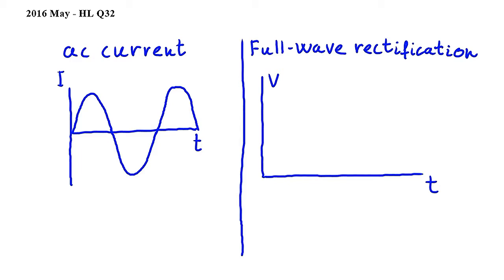the current time graph has a sinusoidal shape. Now this current would create a sinusoidal potential difference time graph as well, and rectification is used to avoid these fluctuations in the potential difference.